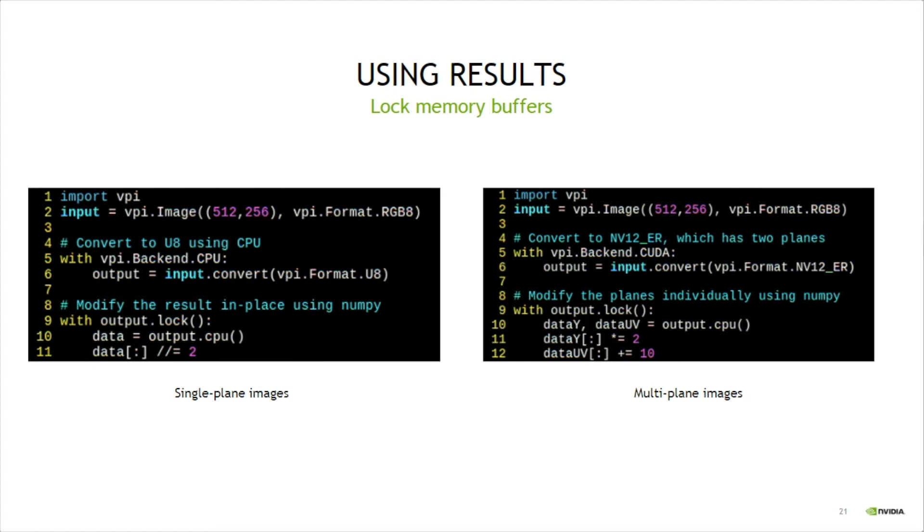Here the output is NV12, which has two planes. Data Y and Data UV are a view to the image contents. Luma gets multiplied by 2, and U and V channels are both added 10.